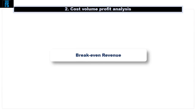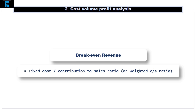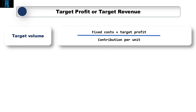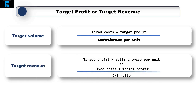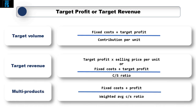We can calculate the breakeven revenue using the CS ratio by taking the fixed costs and dividing by the CS ratio instead of by contribution per unit. Where there are multiple products, the weighted average CS ratio must be used. We can also extend the breakeven calculations to find a target profit or target revenue. The target profit formula becomes total fixed costs plus target profit divided by contribution per unit. The target revenue can be calculated as fixed costs plus target profit divided by the CS ratio, in much the same way as for the breakeven revenue. With multiple products, remember to use the weighted average CS ratio.